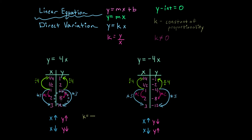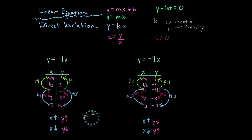I'm going to choose a value for y. So 8 over its x value 2 — so 8 over 2 will give me a value of 4.